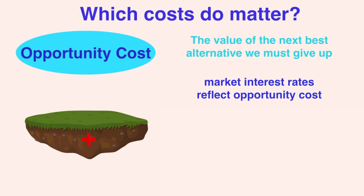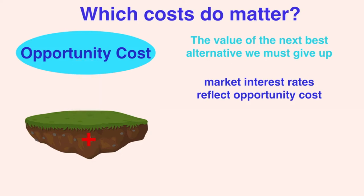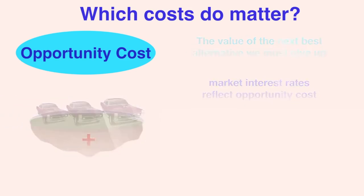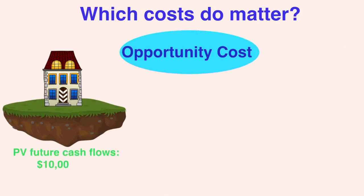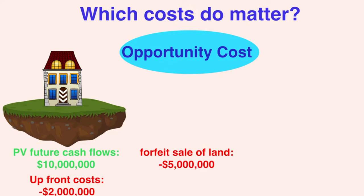Let's say our company is deciding whether or not to open a restaurant in downtown Vancouver. Luckily, the project will require very little cash since they already own the land. But this land still has a cost — opportunity cost. After all, by building a restaurant, we're forfeiting the opportunity to use the land for anything else, like selling it to a development company or building a parking lot. We should include the market value of the land in our project cost, since building a restaurant means we're losing out on the money from selling the land. When we include opportunity costs in our NPV calculation, we know that we can accept any project with an NPV above zero, since it's at least slightly better than the next best alternative.